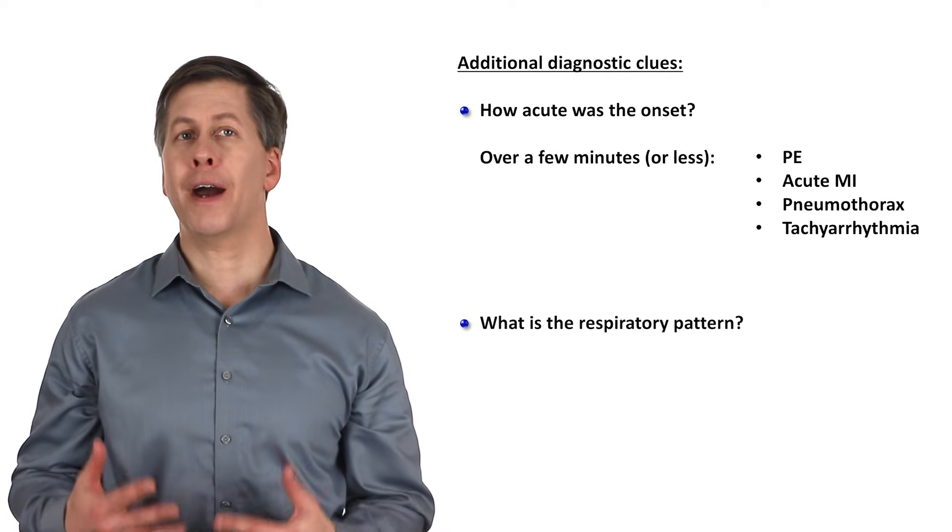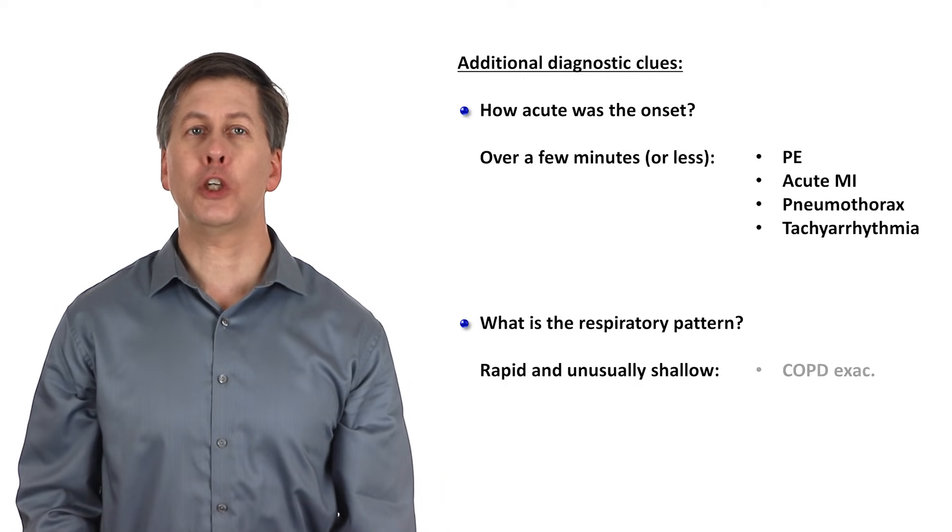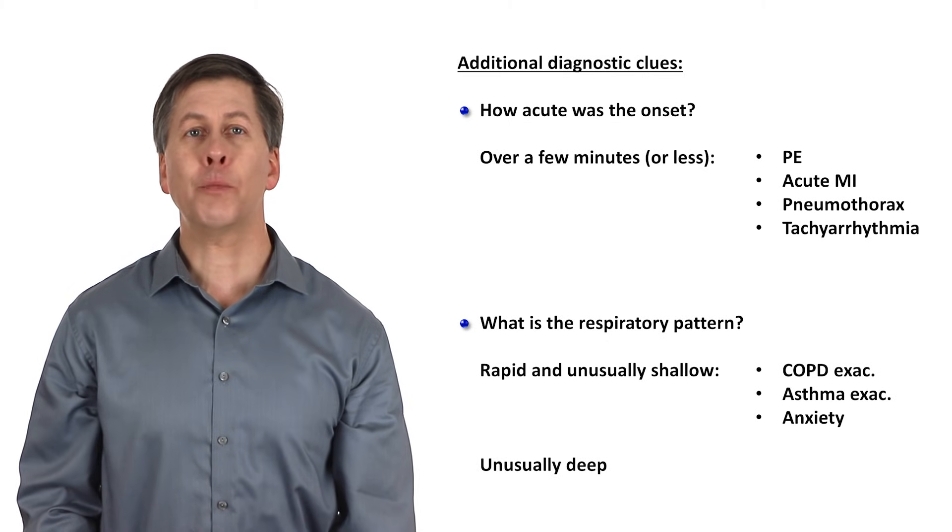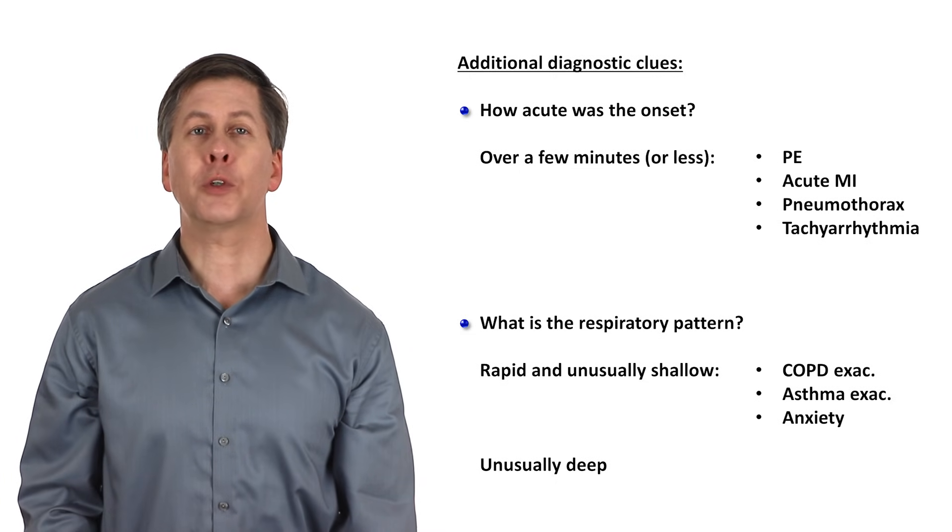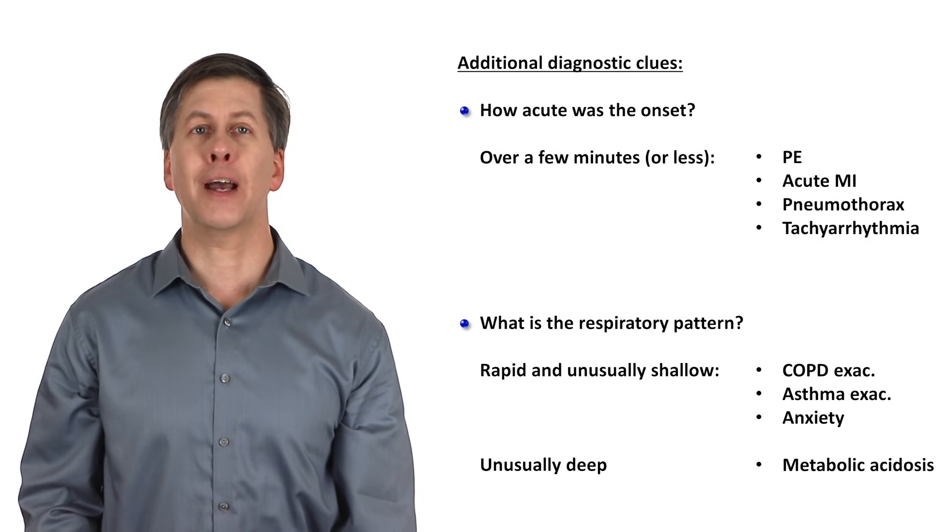Another clue is the respiratory pattern. Rapid and unusually shallow respirations are typical of COPD, asthma, and anxiety. Unusually deep respirations of either an elevated rate or a surprisingly normal rate are typical of the respiratory compensation for metabolic acidosis best described in diabetic ketoacidosis and known by the eponym of Kussmaul respirations.